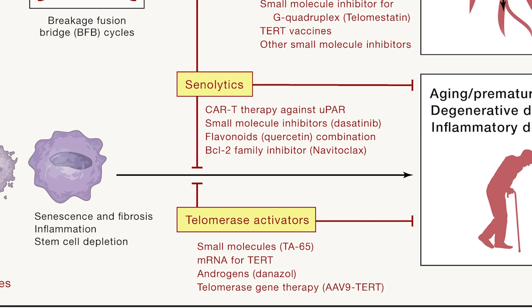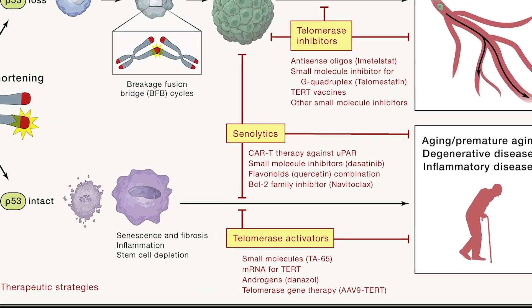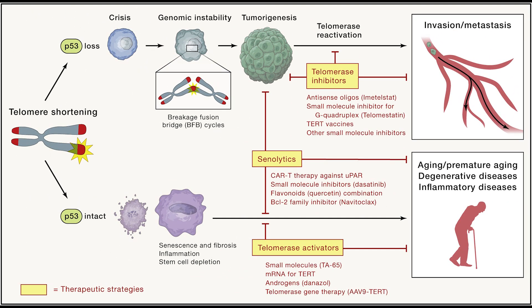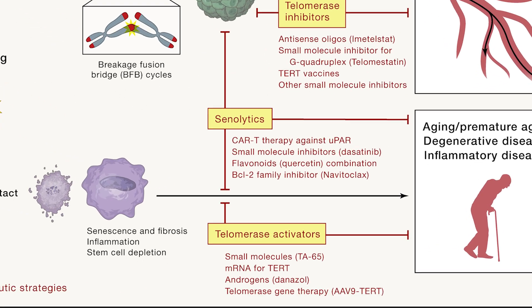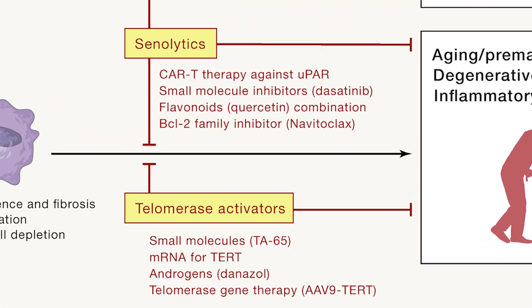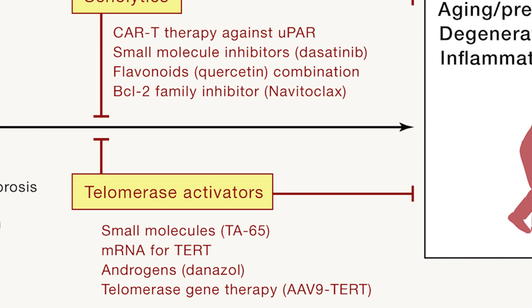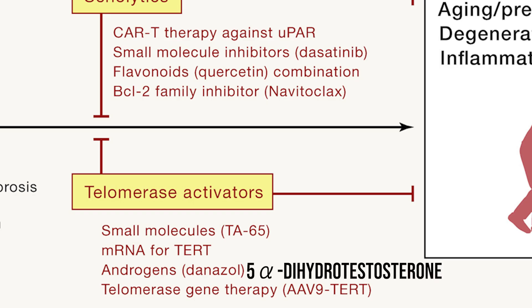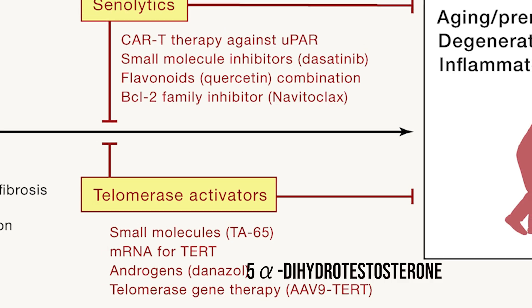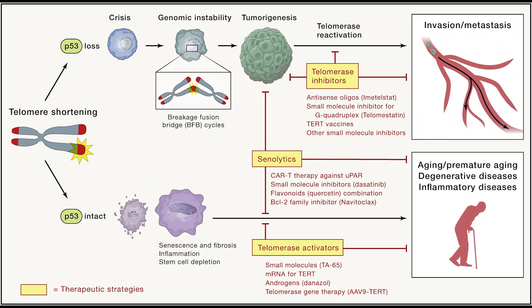Small molecules have been identified to activate TERT, including TA-65, also known as cycloastragenol, and histone deacetylase inhibitors. However, the mechanism of action of these compounds seems quite unclear at the moment, and there is quite limited clinical trial data. There also seems to be interest in hormonal agents such as danazol and 5-alpha-dihydrotestosterone, but again only very early work has been conducted, so it all seems quite inconclusive.